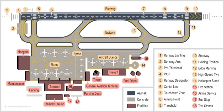Ground control is responsible for directing all ground traffic in designated movement areas, except traffic on runways. This includes planes, baggage trains, snowplows, grass cutters, fuel trucks, stair trucks, airline food trucks, conveyor belt vehicles and other vehicles. Ground control instructs these vehicles on which taxiways to use, which runway they will use, where they will park, and when it is safe to cross runways. When a plane is ready to take off it will be turned over to tower control; after a plane has landed, it will depart the runway and be handed over from tower to ground control.